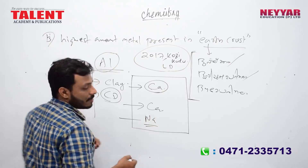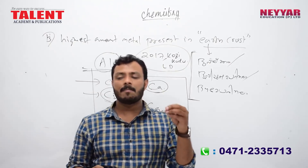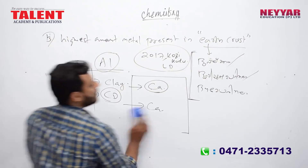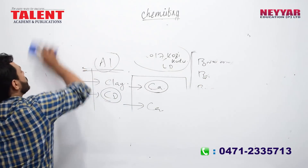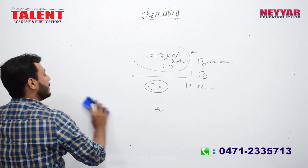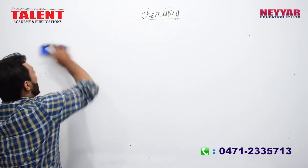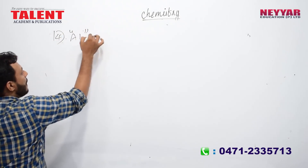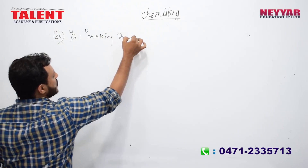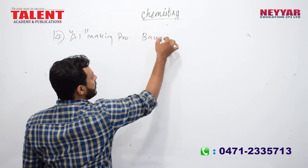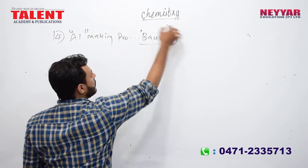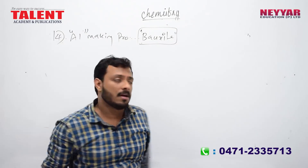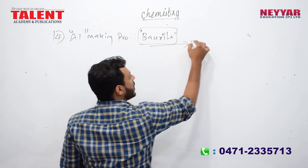The element that controls BP in the human body is sodium. The aluminum making process from its oxide: aluminum is extracted from bauxite. This is the Bayer process — aluminum making process from bauxite.